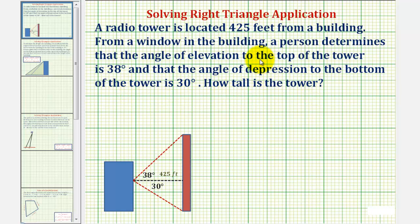To set this up, this blue rectangle will be the building where the person is looking out the window at this location here. This red rectangle represents the tower. And because the tower is located 425 feet from the building, we know that this length here is 425 feet.